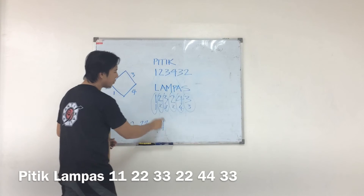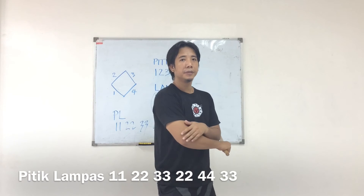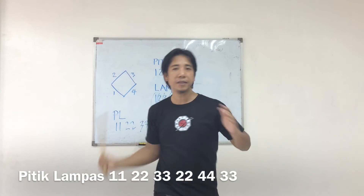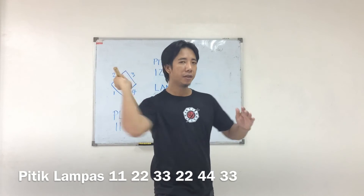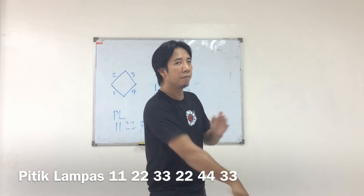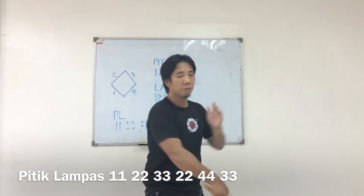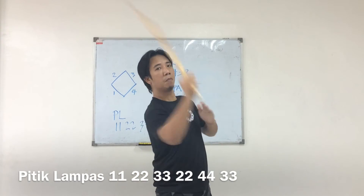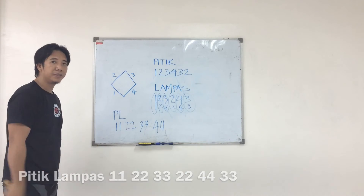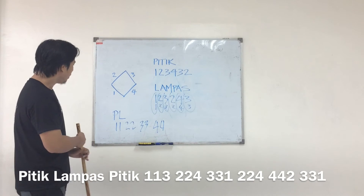With the same sequence one two three two four three, let me show that to you. Pitik lampas — that's one, and then number two pitik lampas, number three pitik lampas, two, four, three. That's how you do pitik lampas.